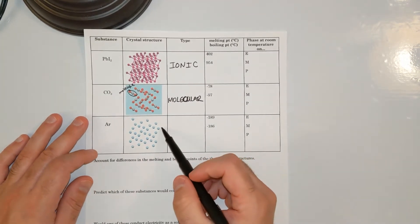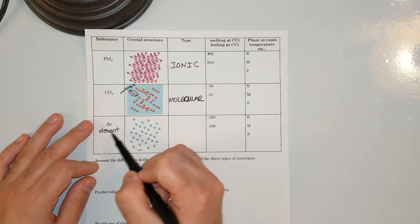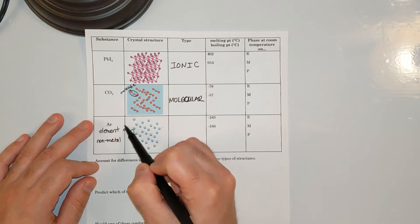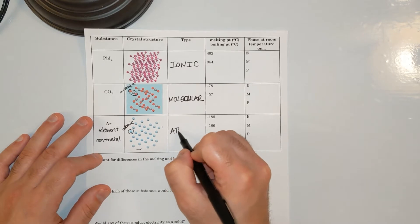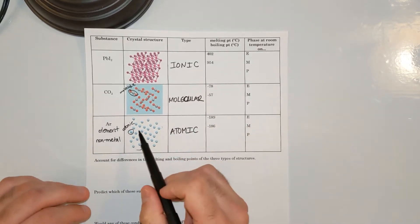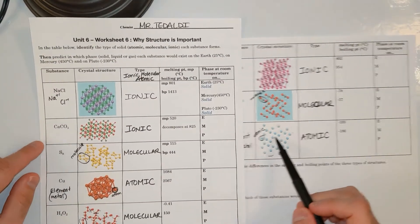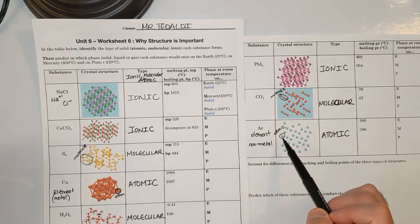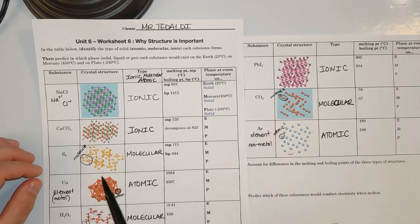The last one looks like we have one color — Argon is the element, and it's a nonmetal. The smallest particle is an atom and none of them are touching. This makes it atomic. Compare Argon to S8: for Argon, the smallest particle without connections is an atom, making it atomic. For S8, the smallest particle without connections is a molecule, making it molecular.